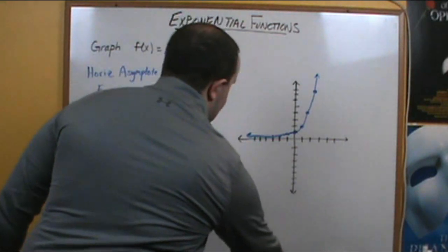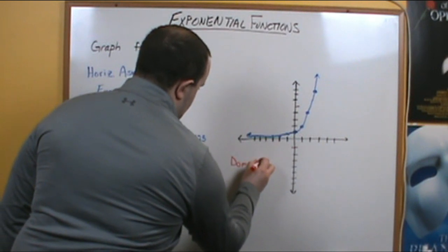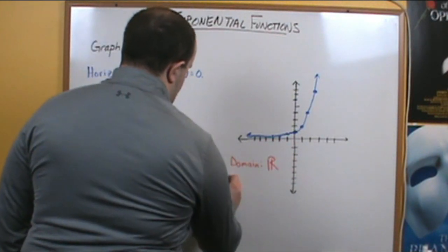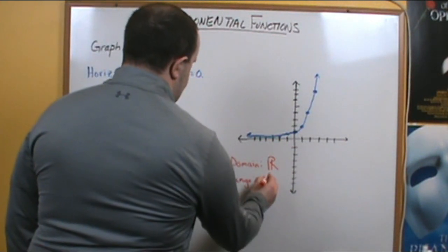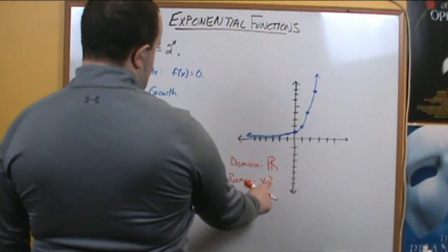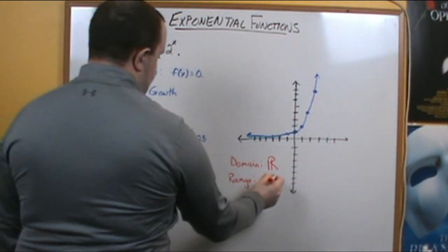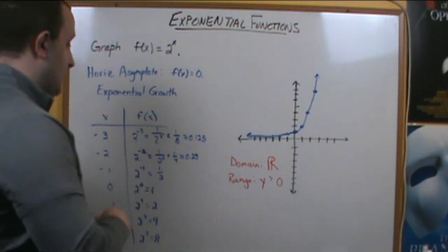Now let's state some domain and range. Our domain — we can pick any value for x — so the domain is all real numbers. Our range: since it's exponential growth, the y values are greater than the asymptote, which is at 0. So our range is y greater than 0.